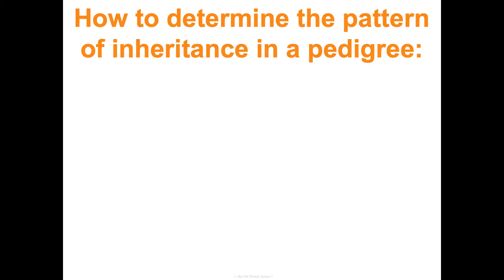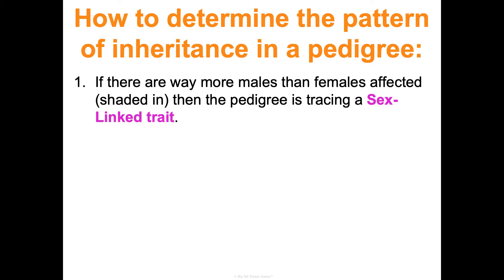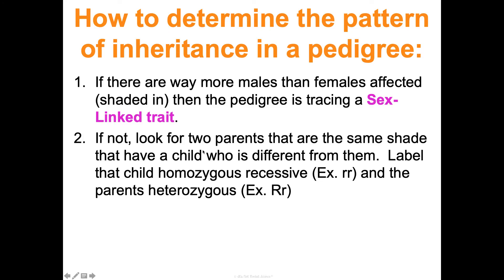Here's how to look at a pedigree and figure out its inheritance pattern. First, check if far more males than females are shaded — if so, it's likely sex-linked. If not, it's likely autosomal. Second, look for two parents who are the same (both shaded or both unshaded) with a child who is different. Label the parents as heterozygous and the child as homozygous recessive — that's the only way two same parents can have a different child.